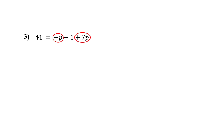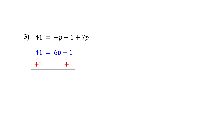First, combine the like terms. Negative p plus 7p gives us 6p. Then bring down the rest. This is now a two-step equation. So next, isolate 6p by adding 1 to both sides. On the right, negative 1 plus 1 cancels out, leaving 6p. On the left, 41 plus 1 is 42.